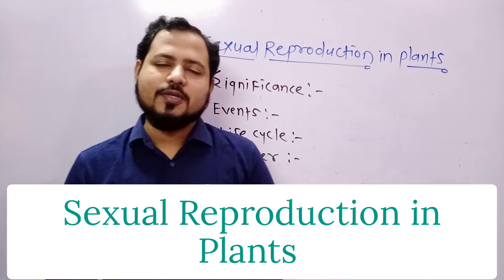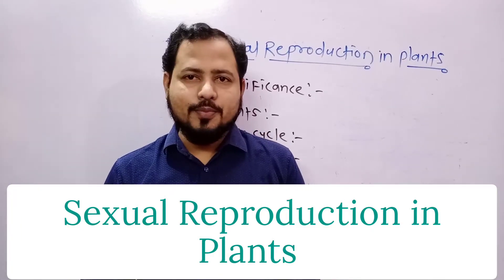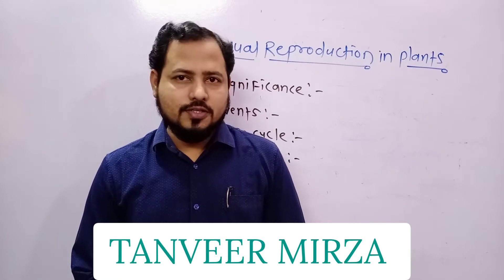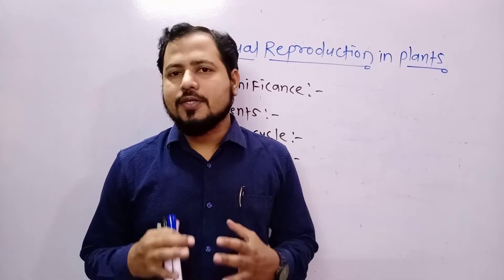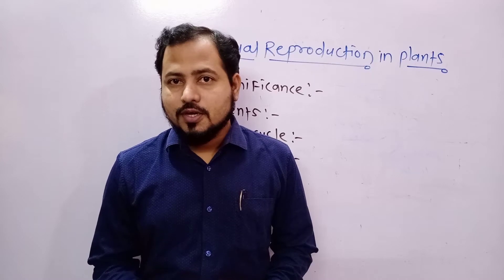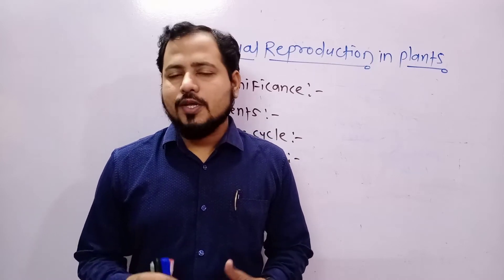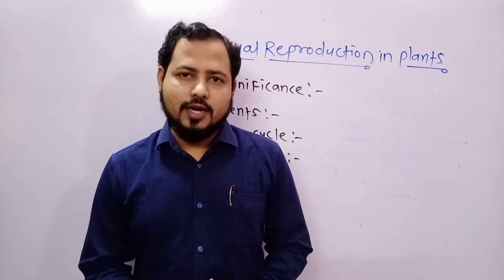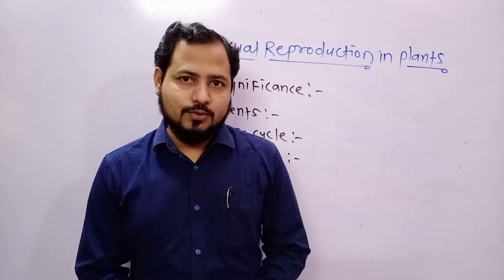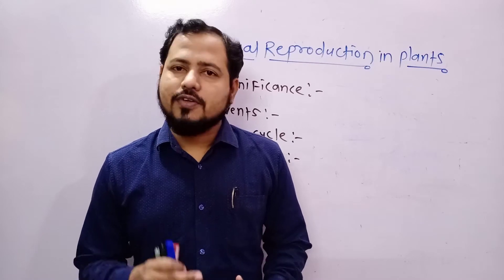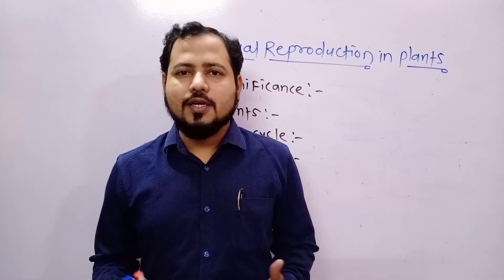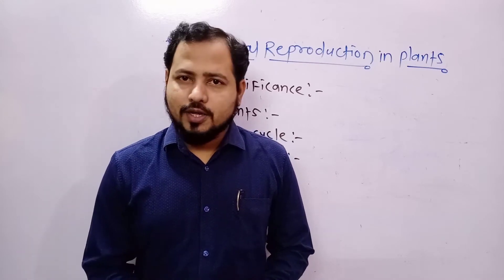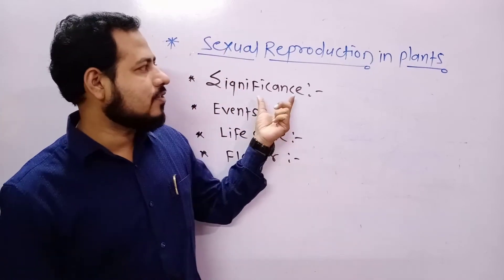Welcome students. This lecture is based on sexual reproduction in plants. Sexual reproduction is the process which involves gametes. Gametes are produced and they fuse to form a new diploid life which is said to be zygote. After successive embryology that may terminate into the new plant body — that is sexual reproduction in plants.